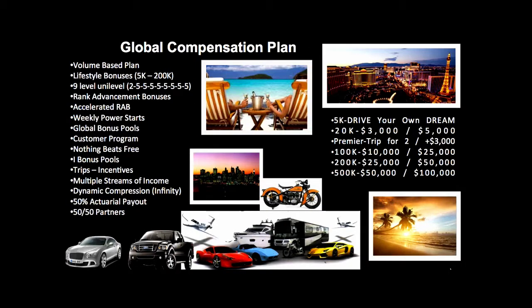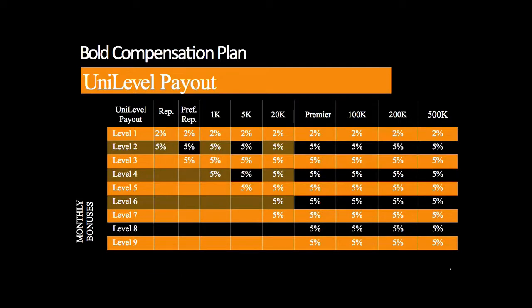Then we talk about our compensation plan. There are a lot of amazing bonuses — the Drive Your Own Dream and rank advancement bonuses, where there are a couple hundred thousand dollars of bonuses you can qualify for. We talk about bonus pools. But we don't go into the details of the compensation plan — we just want them to understand there's a lot of money. I like to focus on the unilevel because that's my residual income. That's where I build three to five teams and get my duplication — leveraging myself so we all do a little and it adds up to a lot.